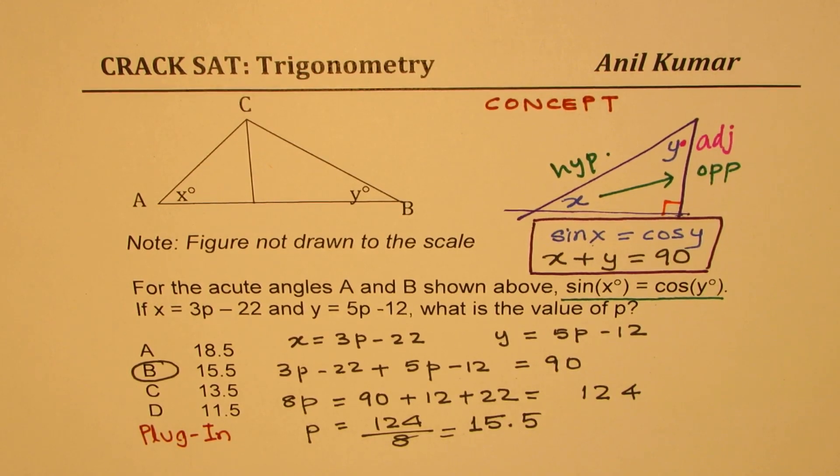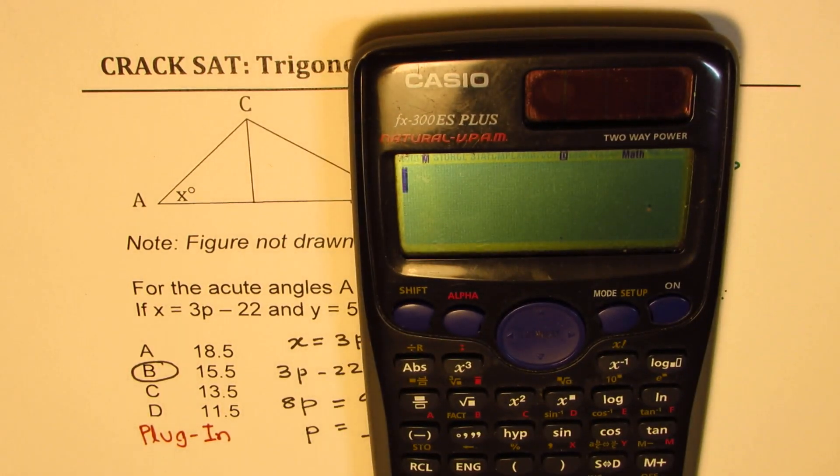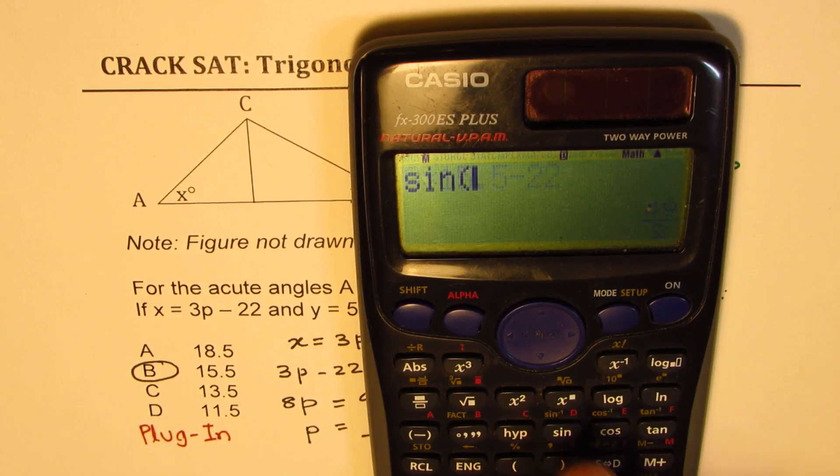Now let's check. Write 15.5. So if I write value of p as 15.5, we get 3 times 15.5 and then from here we'll take away 22. So we get some angle. For this angle, let us find sine of this answer, right?